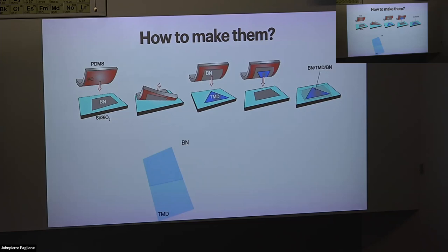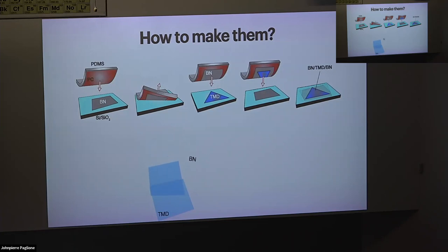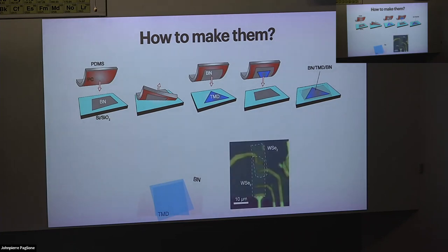To create a twisted structure: imagine a larger hBN covering the top part of the TMD — the interaction between them is strong enough that lifting it picks up only half of your TMD. You then produce a rotation and put them back together. By controlling the global rotation angle, you control the relative twist angle between the two layers. This is one example image of a twisted structure.